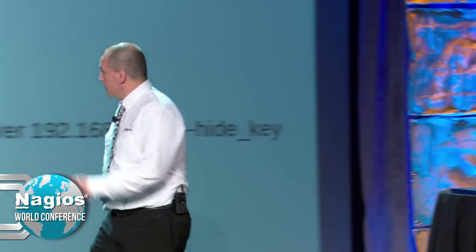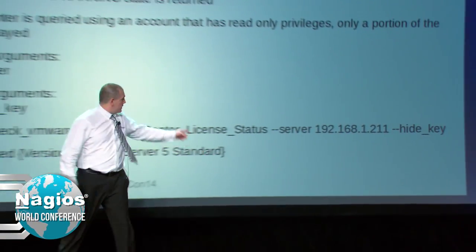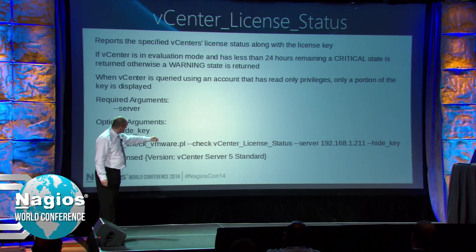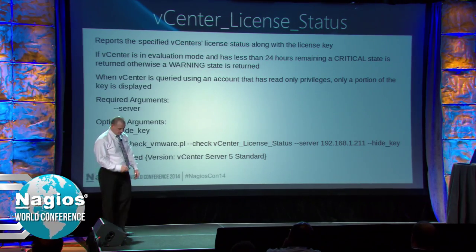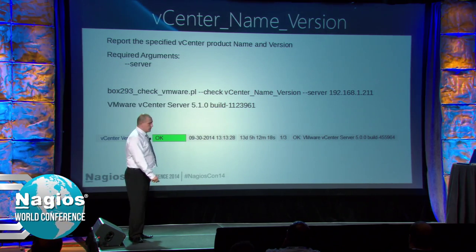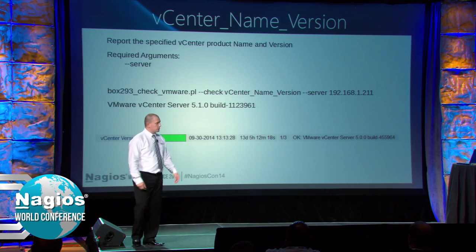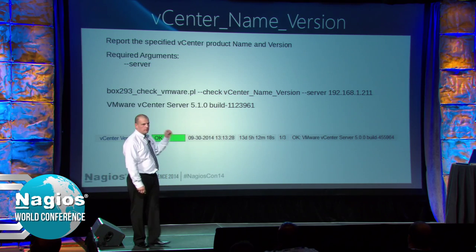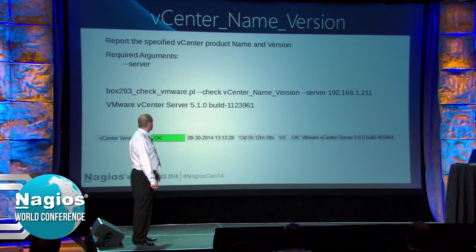Is your vCenter server licensed? This is a way to find out. You can hide the key if you don't want it displayed. The result that comes back is just the version and it says it's okay, it's licensed. The name and version check is more of an auditing thing - without having to log into the product, I can go to my single pane of glass, being Nagios, and find out that information.